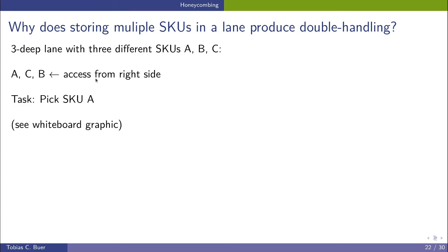So this is a lot of double handling, and this is only resulted from the effect that we have different SKUs in one lane. And of course to avoid this double handling, which is very ineffective, we try to have only one SKU per lane. So for example, we store only A, A, A in this 3-deep lane, or only B, B, B, but no mixture of SKUs.